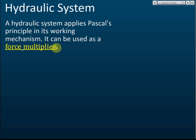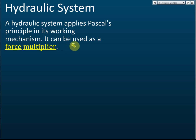A hydraulic system can be used as a force multiplier. Force multiplier means you can multiply the force — if you give 2 newtons you can get 4, 6, 20, or even 100 newtons out. So this hydraulic system multiplies a small input force into a large output force.